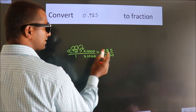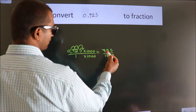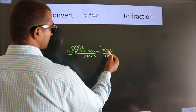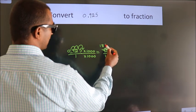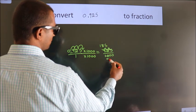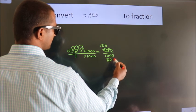Now I cancel with 5. 5 into 925 gives 185. 5 into 1000 gives 200.